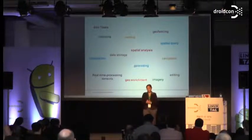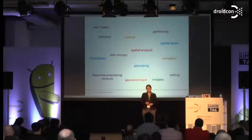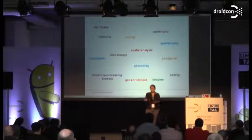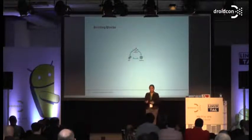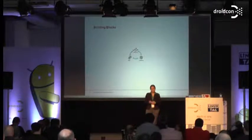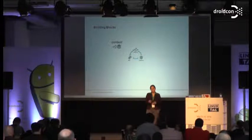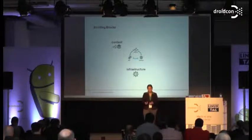These are all geospatial tasks we can exploit, but mostly people only use a map and a position. There is still a lot of potential. So we have data and a lot of analysis possibilities. How can we build such an app? First, we need content — for example we could use OpenStreetMap data. Then we need infrastructure, a server where we can host our feature services.